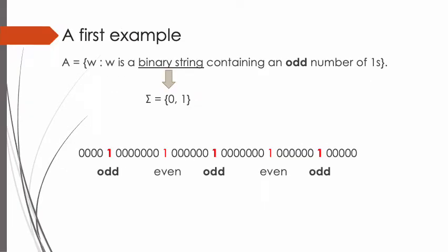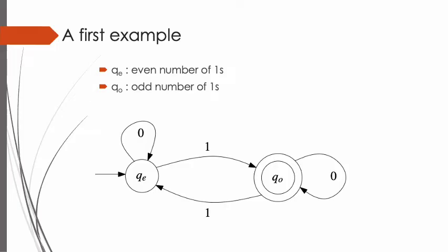Here's our first example. A is defined as the set of words W such that W is a binary string containing an odd number of ones. Because of the question, our alphabet will be binary, so Σ includes 0 and 1 only. Since the question does not deal with the letter 0, we can focus on only letter 1. Each letter 1 entered by the user will change the even/odd status of the number of ones in the typed string. It is sufficient to define two states: Q_odd and Q_even. Due to the nature of the problem, Q_even should be defined as the initial state. Any 0 symbol entered by the user does not require any state change, but the symbol 1 causes the states to change every time.